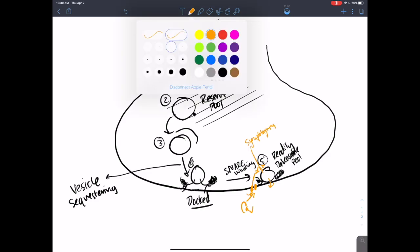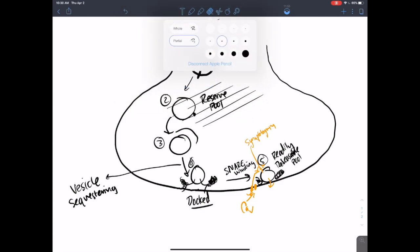And that leads to vesicle release. So that's what creates these things that we call omega figures, called that because they look like the Greek letter omega. So that leads to neurotransmitter release.